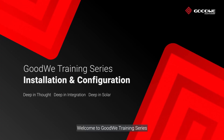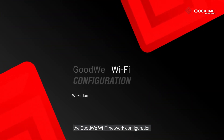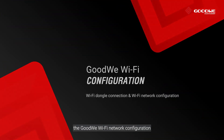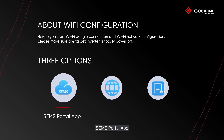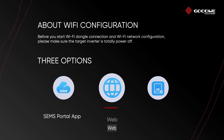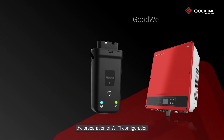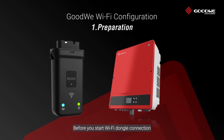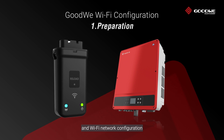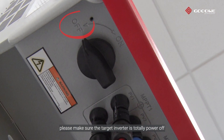Welcome to the GoodWe training series. Today we will take you through the GoodWe Wi-Fi network configuration. There are three options available: SEMS Portal app, web, and Solar Go app. Before you start Wi-Fi dongle connection and Wi-Fi network configuration, please make sure the target inverter is totally powered off.